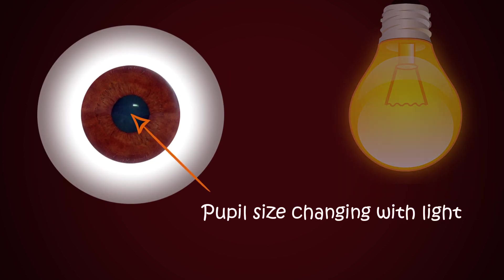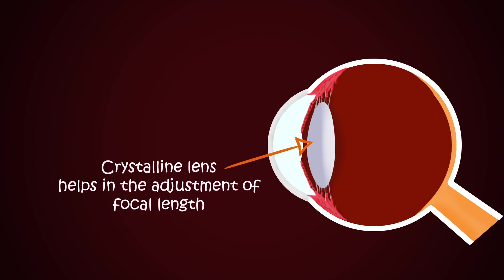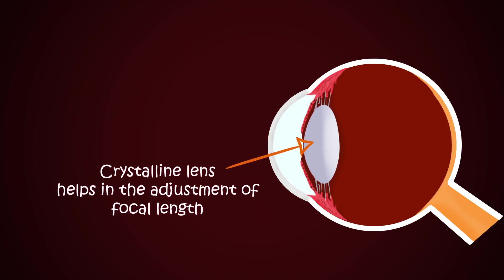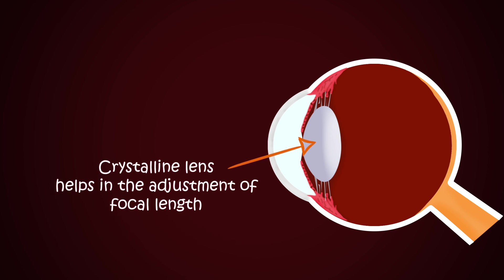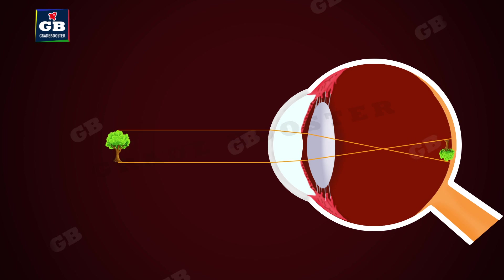The crystalline lens helps in the finer adjustment of focal length required to focus objects on the retina. It forms an inverted real image of the object on the retina. The retina is a delicate membrane having many light receptors.